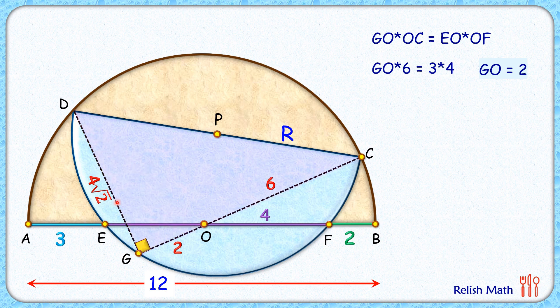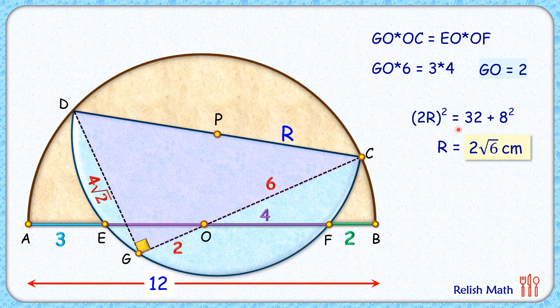How about if we look at triangle DGC? Now in this big triangle, DC is the hypotenuse. So we get DC is 2R. 2R squared is 4 root 2 squared plus 8 squared. Solving it, we'll get R as 2 root 6 cm and that's our answer.